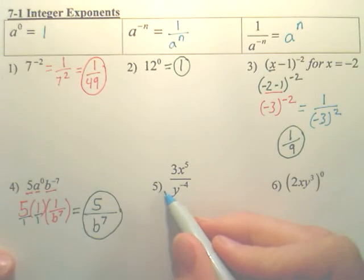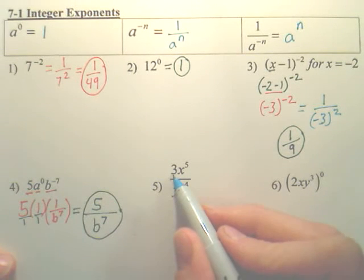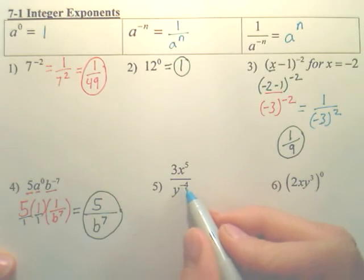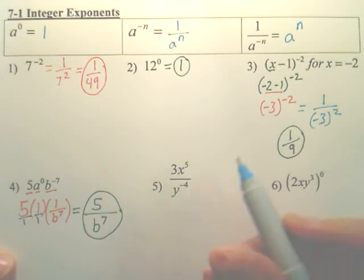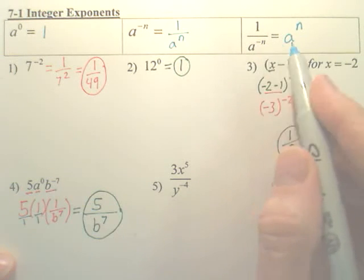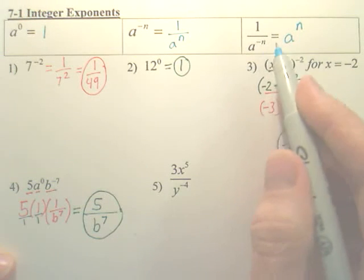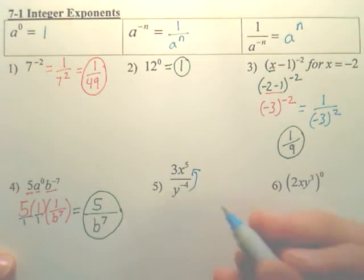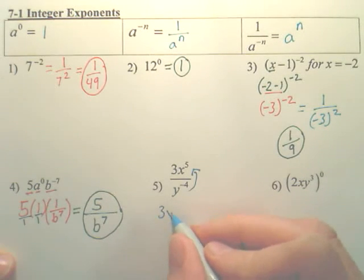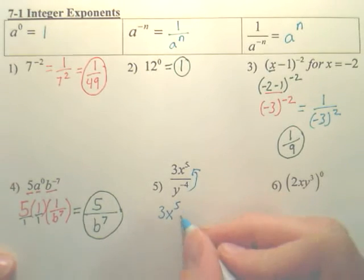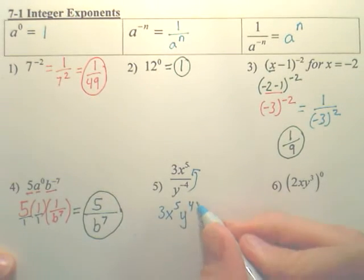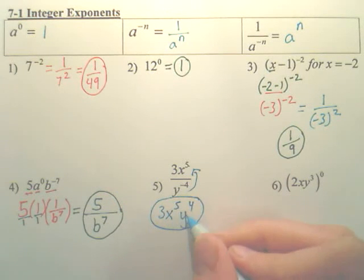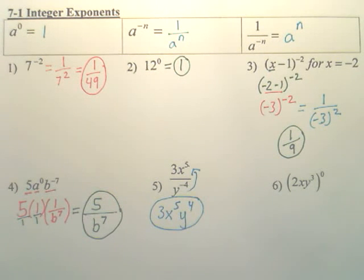Alright. Number 5. 3. Leave it as 3. x to the 5th doesn't change. This x to the 5th. But this negative 4th power. Remember, you don't want negative powers. And according to this property, if you have a negative power, it drops to the front. It jumps up top. So basically, this is just going to jump up here. And it's going to be 3 x to the 5th. And this jumps up top with it. And you're done. Because you can't combine x to the 5th and y to the 4th. That's simply the answer.